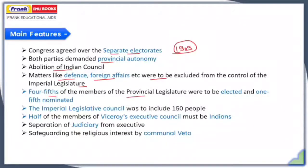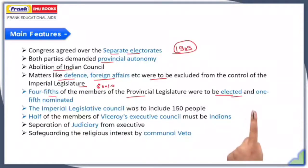They demanded that four-fifths — that is, 80% — of the members of provincial legislatures should be elected, which can be compared to the modern Vidhan Sabha electorate system. The rest were to be nominated at the discretion of the Viceroy of India, and this election must be direct via adult franchise.